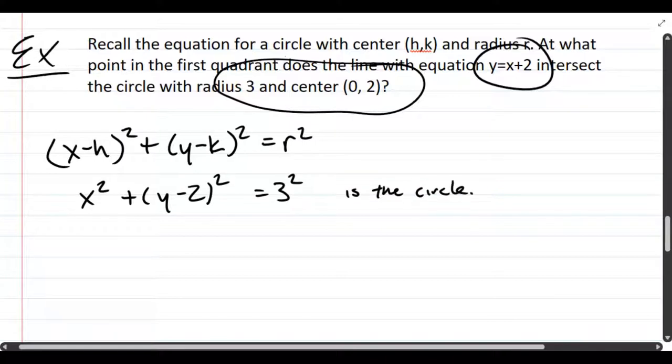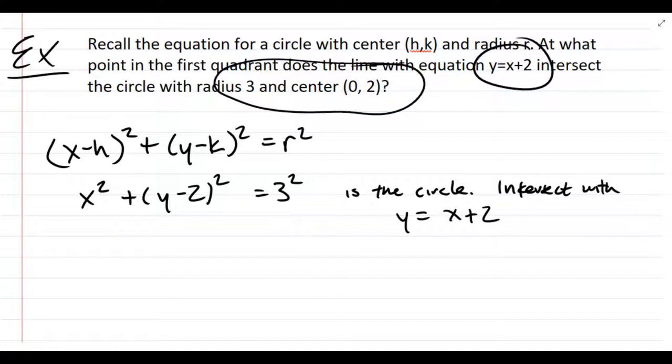We're going to intersect with the line y = x + 2. This is a line in mx + b form. The slope is 1, the y-intercept is 2. However, we're only doing algebra here, so we don't really need to worry about what the graph would look like.